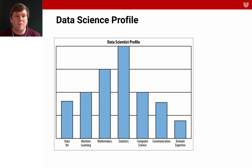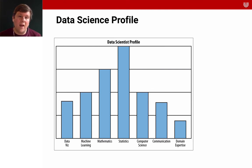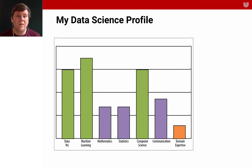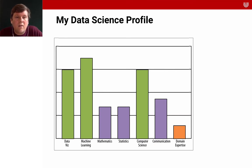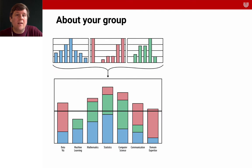What you see in the data science profile is that you have data visualization, machine learning, mathematics, statistics, computer science, communication, and domain expertise. You can basically make an assessment of how much of an expert you are in each area. For instance, I'm quite good at computer science and machine learning, but not really an expert in mathematics or statistics. The idea is to have a group that, together, gets above a certain threshold to be productive.